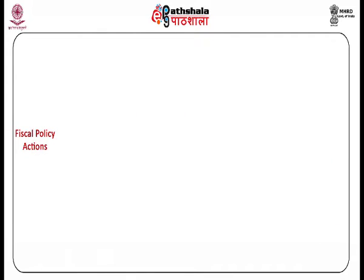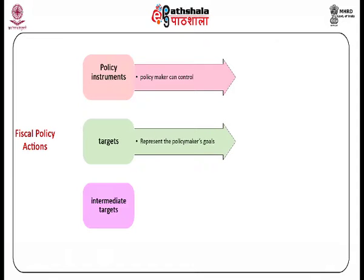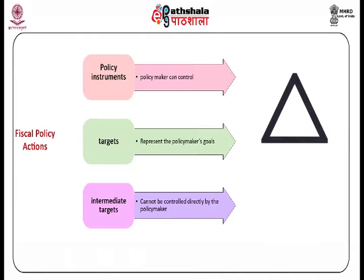We need to define the terms policy instruments, targets, intermediate targets, and policy regimes. Macroeconomic policymaking can involve several variables such as government spending, taxes and transfers, in addition to the money supply. Policy instruments are variables the policymaker can control. Policy goals or targets are variables which represent the policymaker's goals and cannot be controlled directly. Government actions to change spending, taxes, or transfers are called fiscal policy actions, while actions to change the money supply are monetary policy actions.